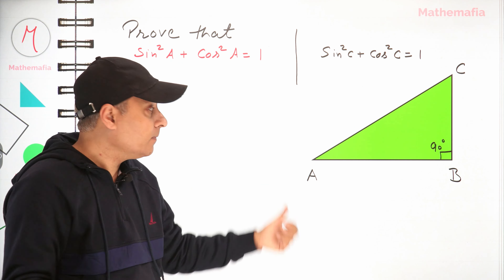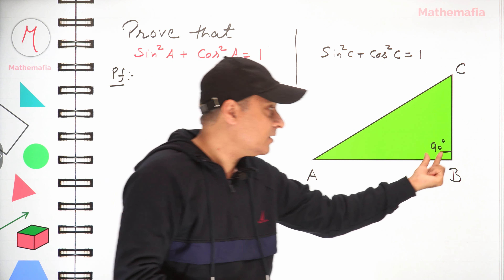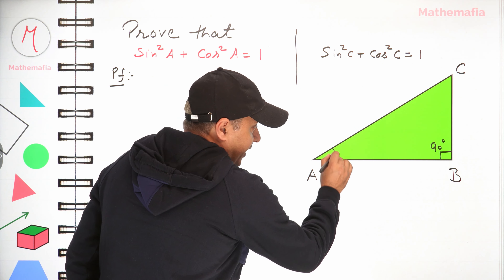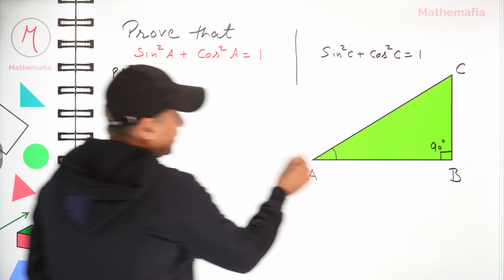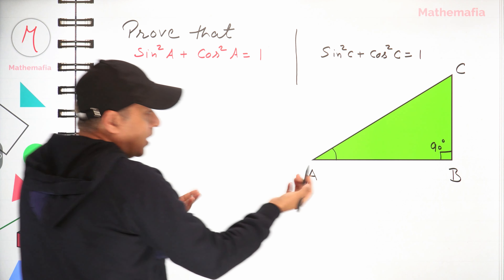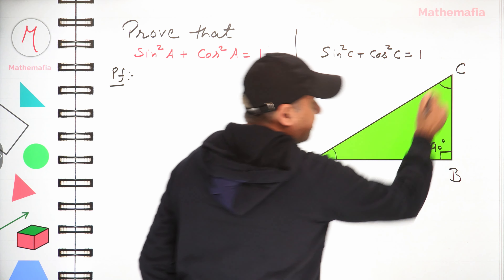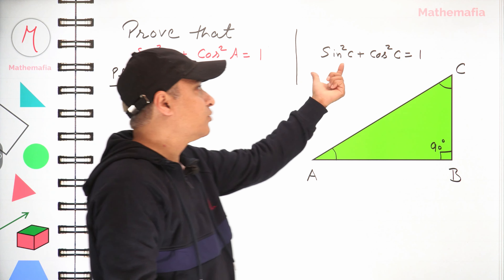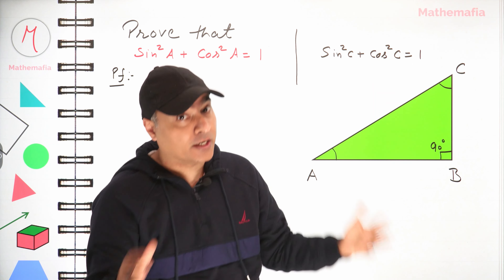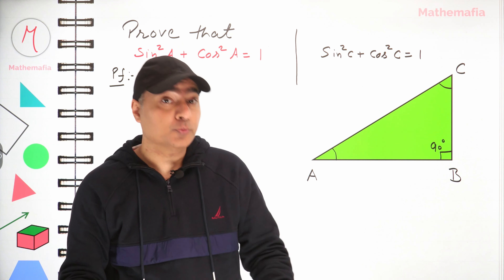So what does this mean? If I have this right-angle triangle where the right angle is at B, then if you take angle A, we can prove that sin²a + cos²a = 1. Or if I take angle C, even then we can prove that sin²c + cos²c = 1. So this is a generic formula.